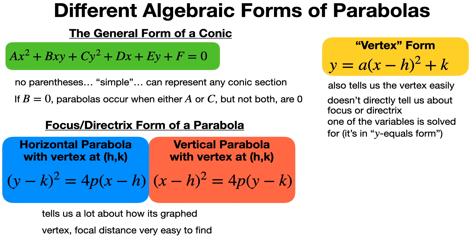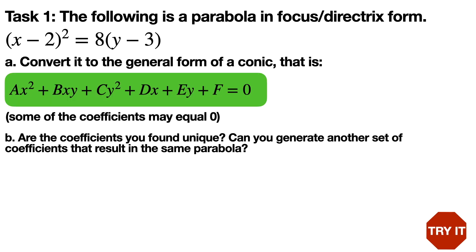The goal of today's lesson is to convert between forms. For the first task: the following is a parabola in focus-directrix form — x minus 2 squared equals 8 times y minus 3. Convert it to the general form of a conic by getting rid of all the parentheses. Note that some coefficients may equal zero, and consider whether the set of coefficients you find is unique — can you generate another set that results in the same parabola?